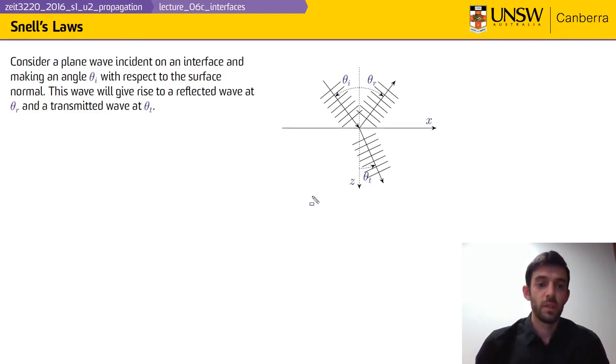First, we can consider a plane wave that is incident obliquely on an interface. That obliquity is given by the angle theta_i with respect to the normal, shown here along the z-axis. This will give rise to the reflected wave at theta_r and a transmitted wave at theta_t.